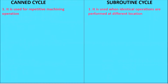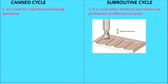Second, the subroutine cycle is used when identical operations are performed at different locations. You can observe the same shape — identical shapes are there but they are at different locations: first location, second location, third, fourth — but they are identical.